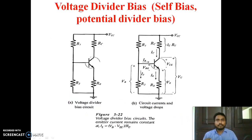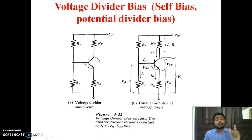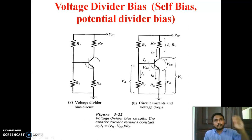We are going to see a very important topic — you may study it in detail at higher stages, but as an introduction we are discussing this one: voltage divider bias. It has other names: voltage divider bias, self bias, potential divider bias, and one more name is universal bias. I already told you we have to fix the Q-point, i.e., the output voltage and current without giving input — that DC value exactly at one location, one point.